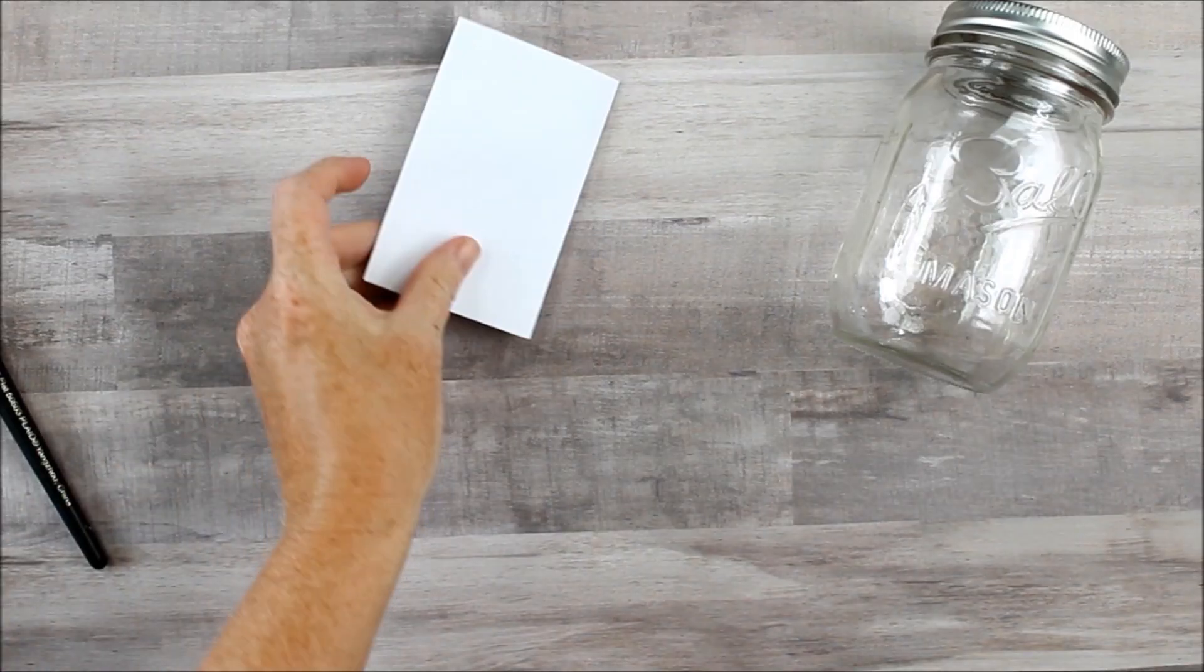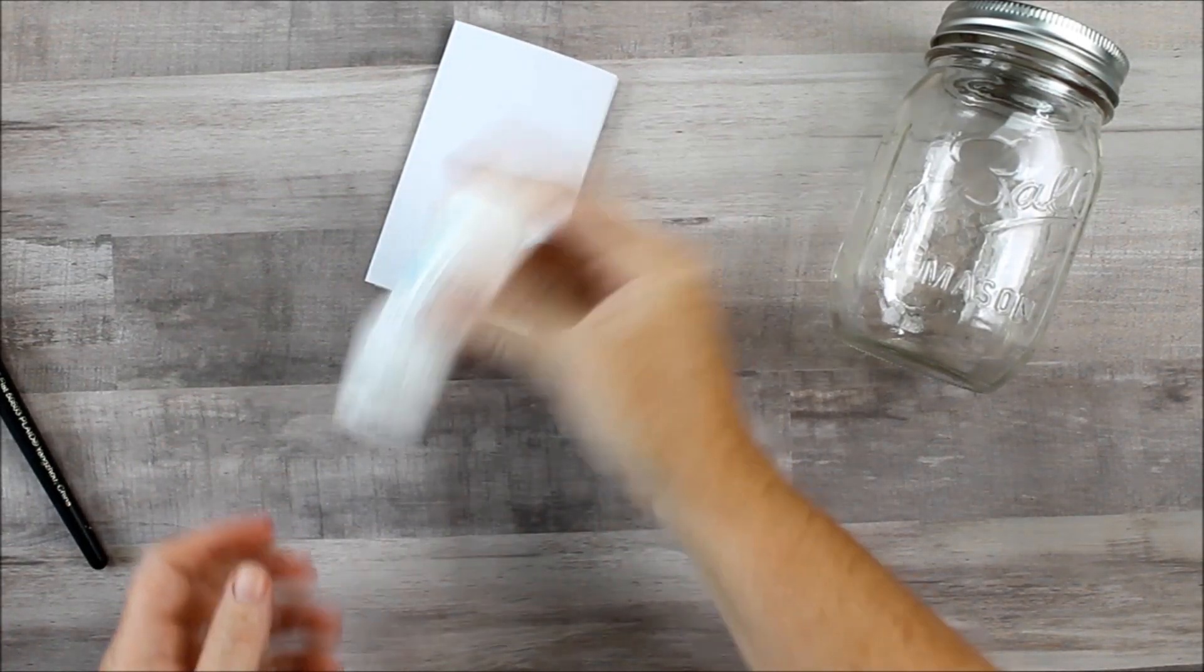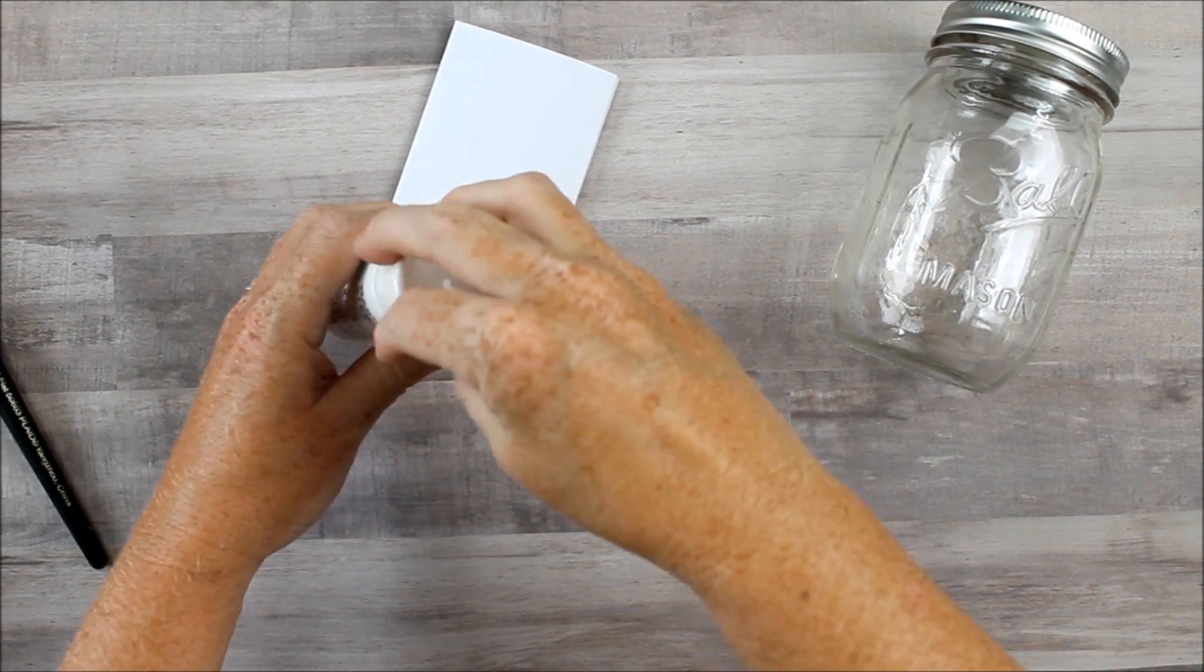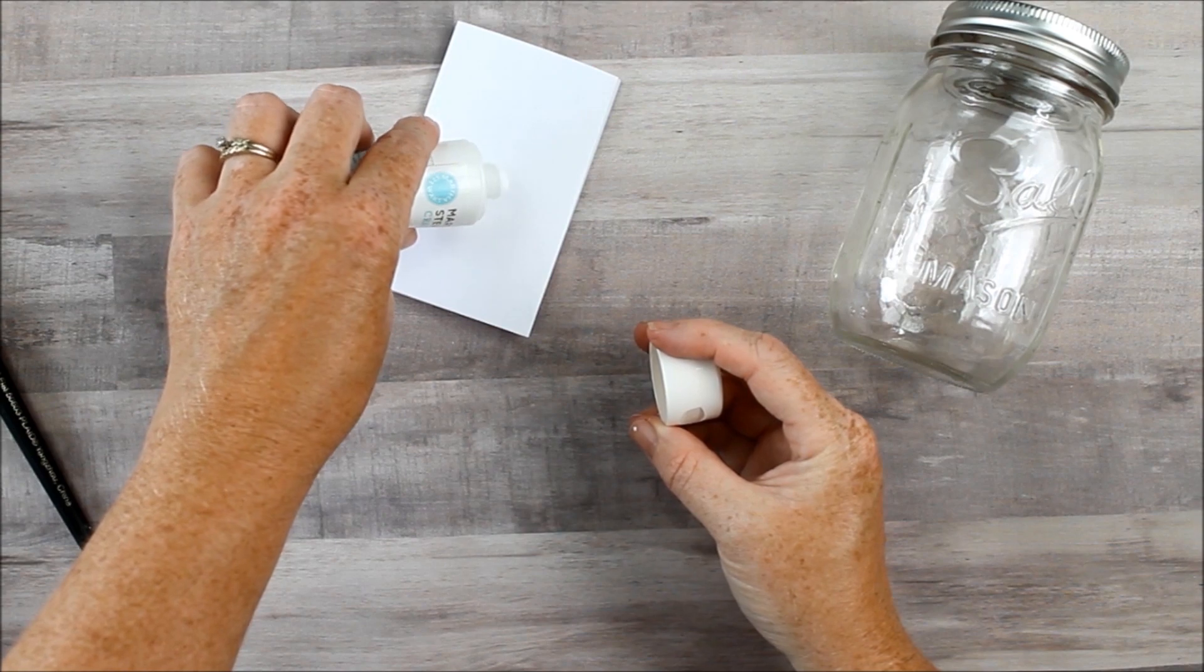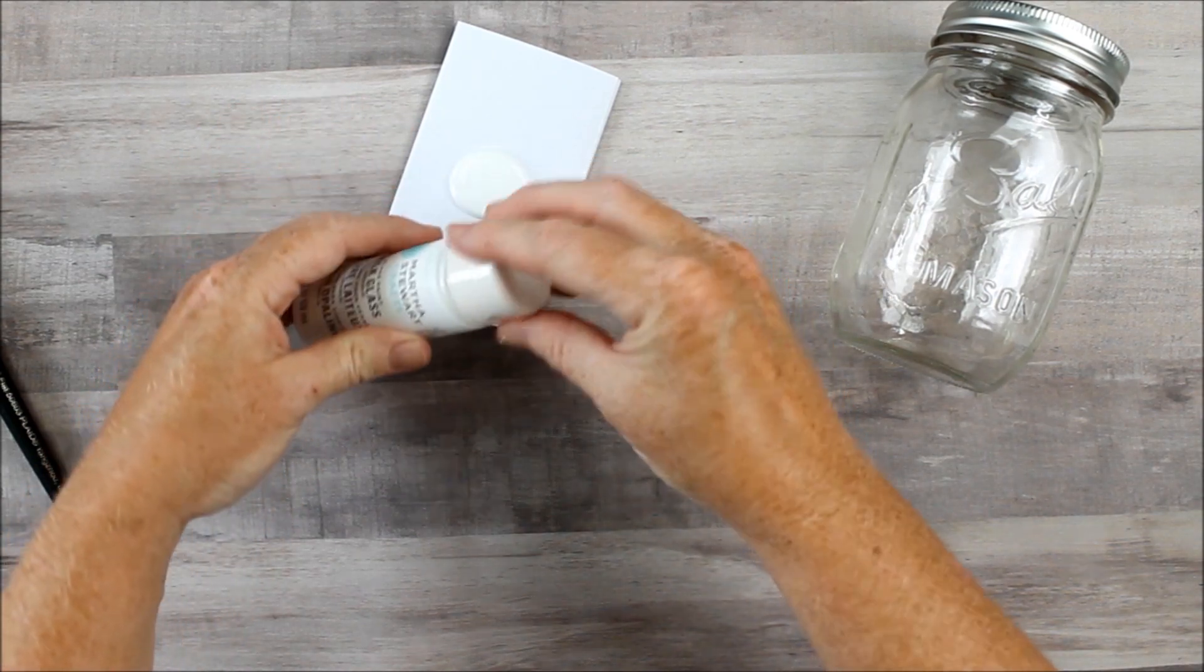Here we're using some flowers for a fall feel. The milk glass paint actually gives you a slightly see-through finish once you finish your project. You just want to pour some of that out. Of course, shake it well before pouring.